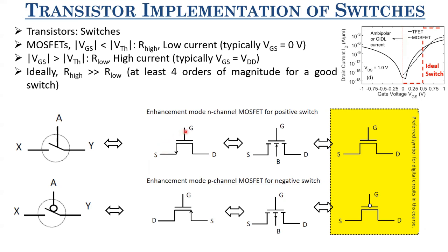We must apply a positive VGS to invert the channel and make conduction possible. Similarly for P-channel MOSFET, at VGS = 0 (meaning VG = VDD since source is at higher potential), if there is no current flowing, it is enhancement mode. We must apply a negative VGS (or equivalently a positive VSG) to create an inversion layer of holes and allow current flow. That is the enhancement mode of operation.